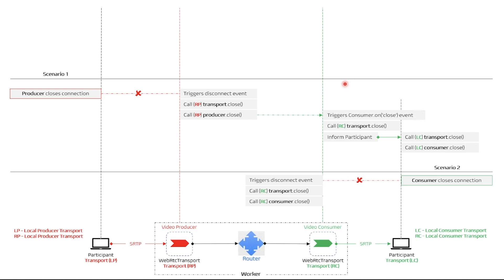In the next video, we will see how to set up our environment, install MediaSoup and all the dependencies we need for our project, write code, and manually demonstrate the flow we have just discussed to achieve a successful connection between a producer and a consumer. In my case, I used a Docker container to run my MediaSoup server. See you in the next video.